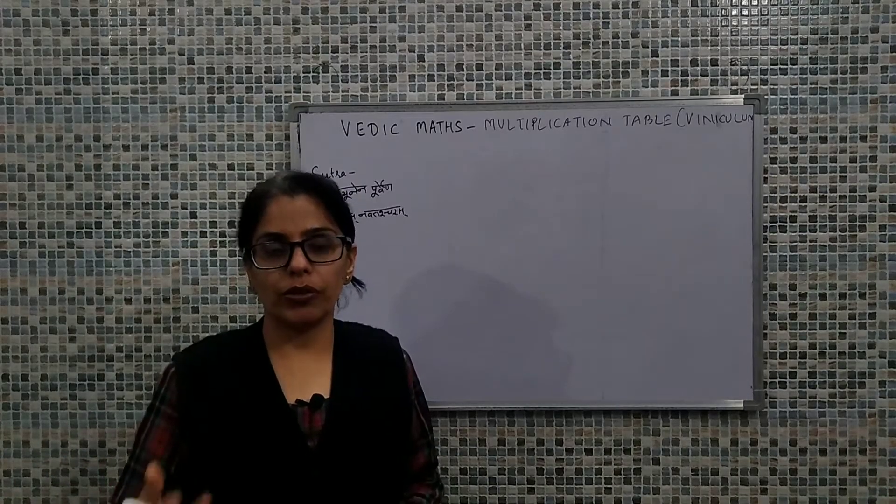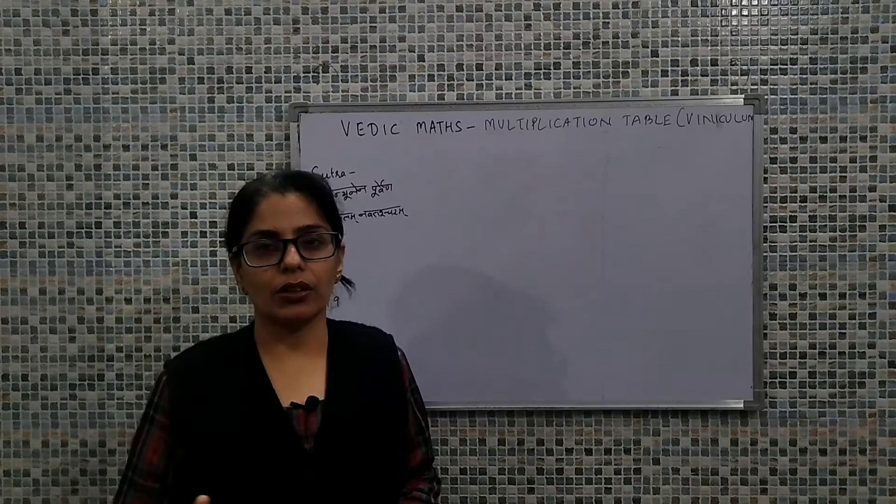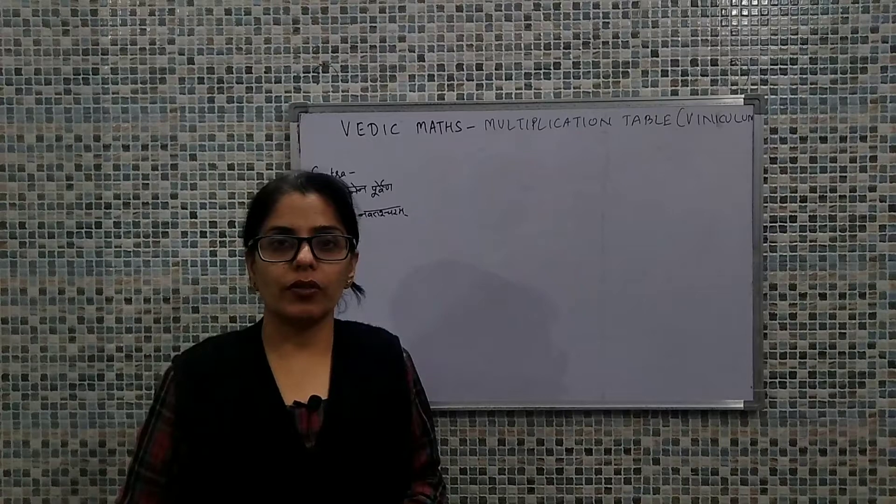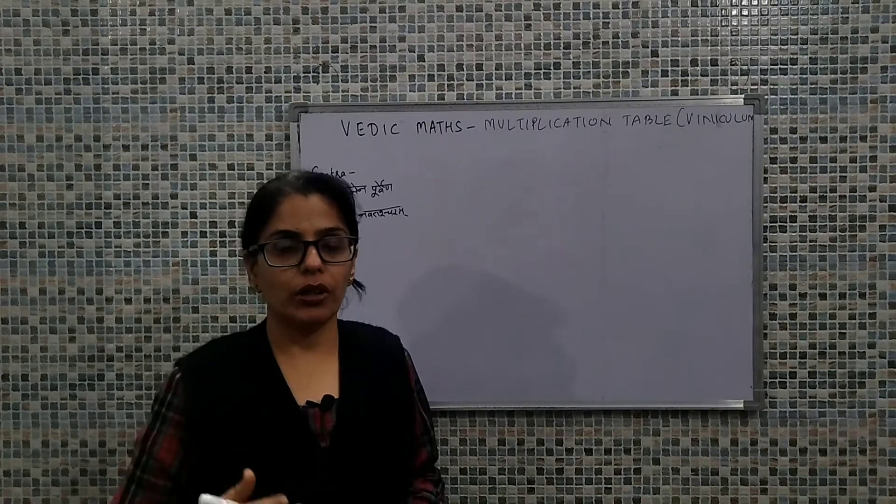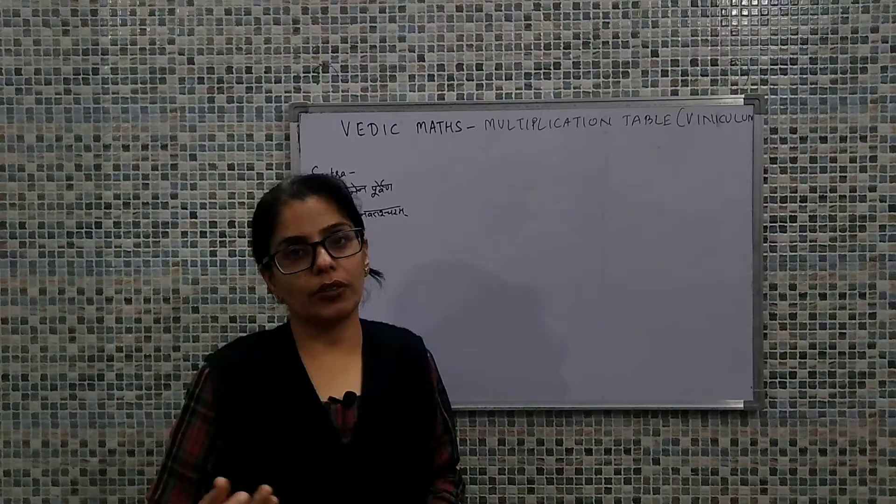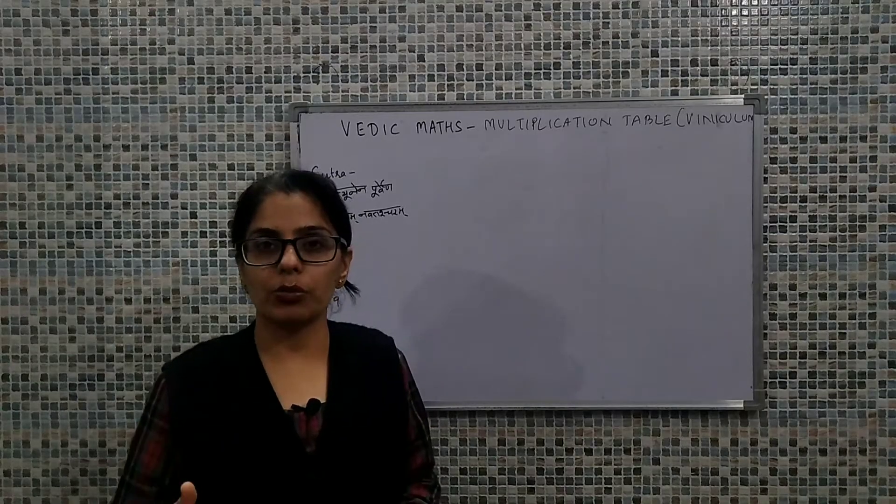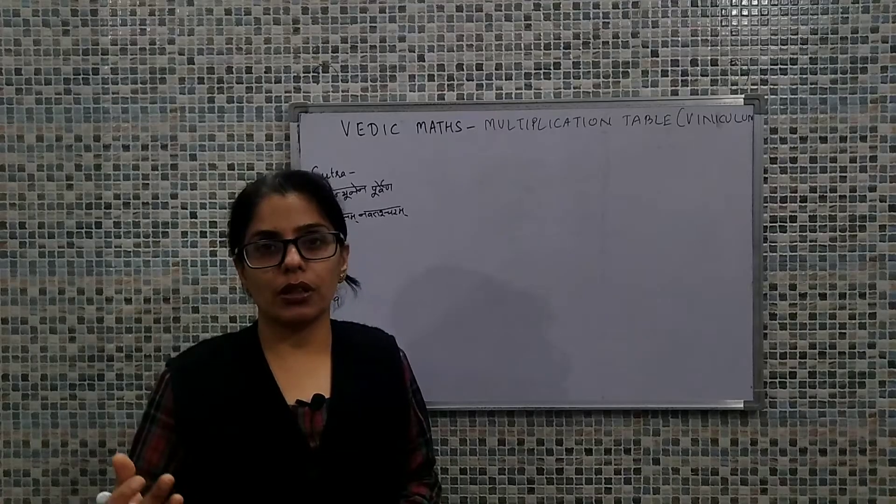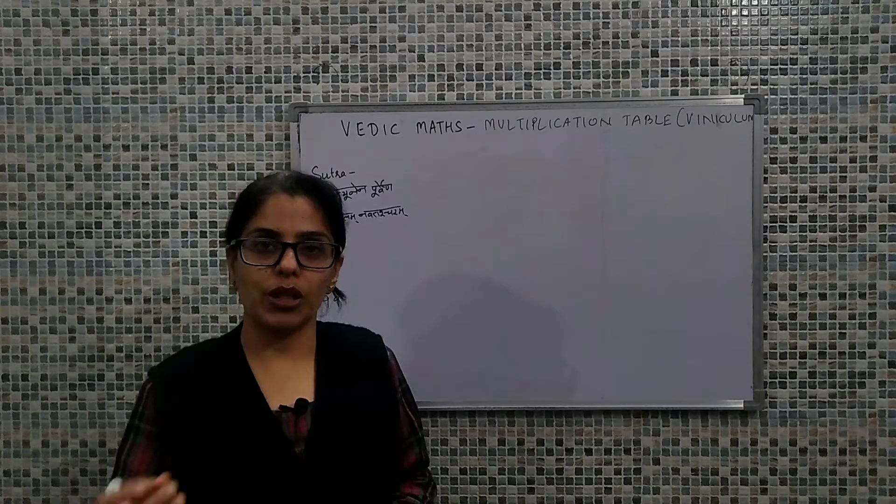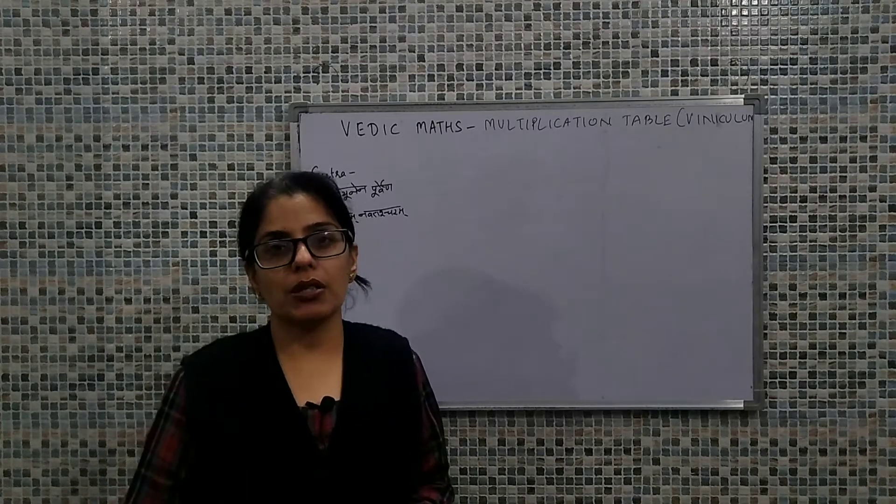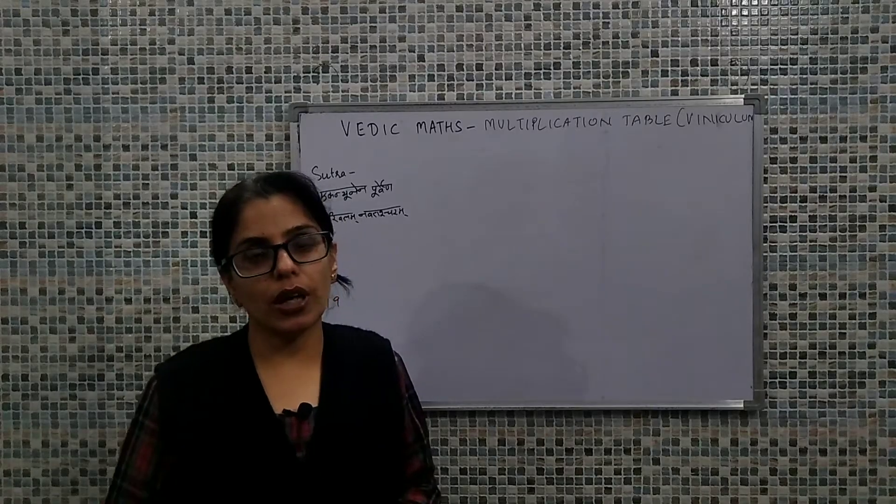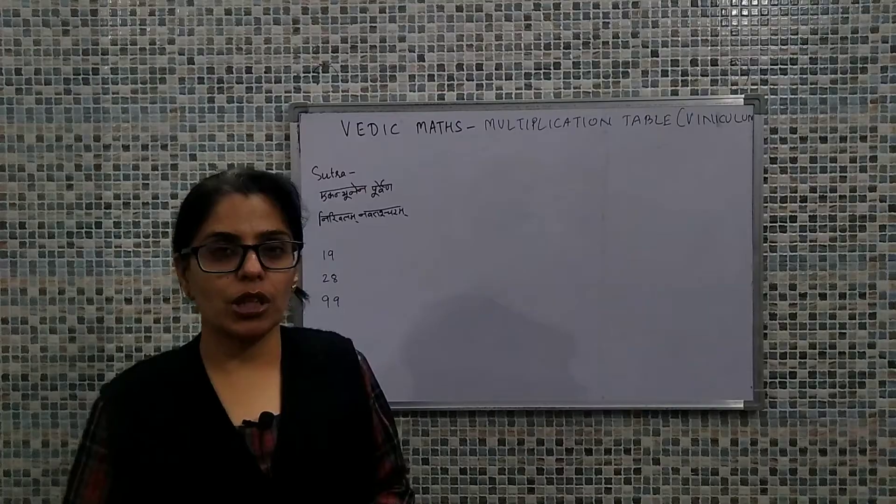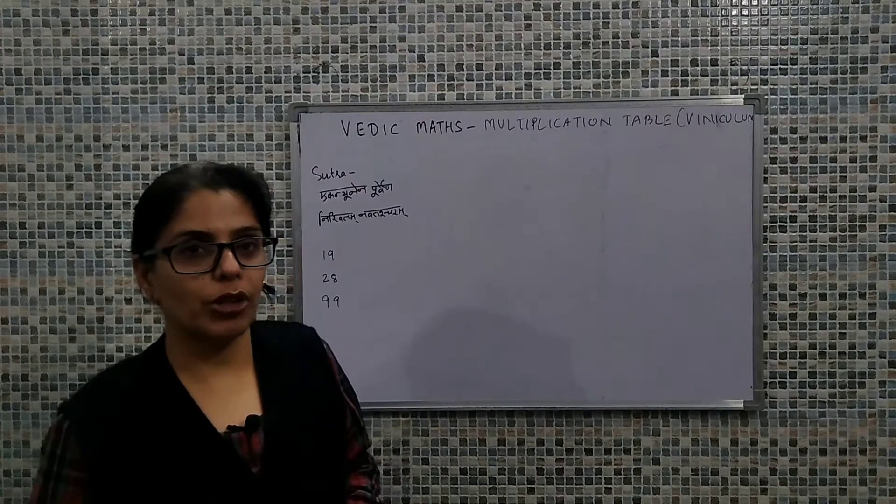Obviously, what is the conventional way that we generally go with for multiplication? Here I would be making you learn that if we are required to generate multiplication tables, without going with the basic rule of multiplication we can simply go with the basic arithmetic operations of additions and subtractions, and we can generate the multiplication table by using the concept of viniculum.